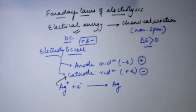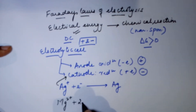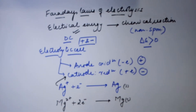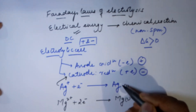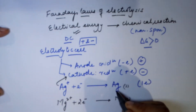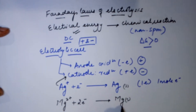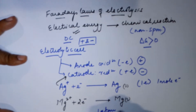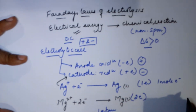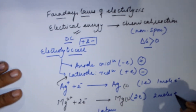Similarly, when we talk about magnesium ions from another solution, magnesium has a two-positive charge — it would require two electrons to be deposited as magnesium solid. If I want one atom of silver deposited, the requirement would be one electron, and if I want one mole of silver deposited, the requirement will be one mole of electrons. For one atom of magnesium, the requirement would be two electrons, but if I want one mole of magnesium deposited, I would require two moles of electrons.